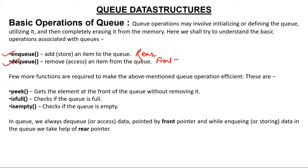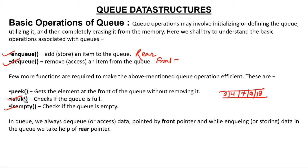Some basic operations of Queue: enqueue means to add an element; dequeue means to delete an element. Peek — if you want to see the front element, for example with elements three, four, seven, nine, and eighteen, peek gives you the value three — the first element — without removing it. isFull checks if the queue is full. isEmpty checks if the queue is empty. We also talk about front and rear pointers.